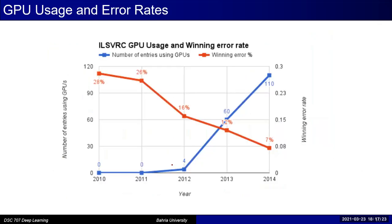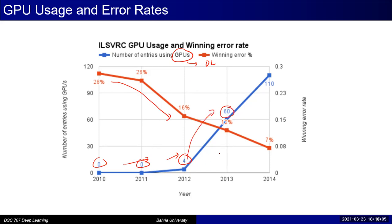Another trend showing migration to deep learning: looking at the same competition over the years, the red curve shows the error rate dropping with time, while the blue curve shows the number of submissions using GPUs — meaning deep networks. In 2012, there were only four GPU-based submissions. The very next year, that number jumped from 4 to 60, and then almost doubled again to 110. Very rapidly, people migrated from conventional solutions to deep learning-based solutions.